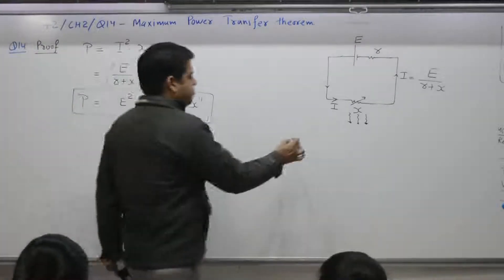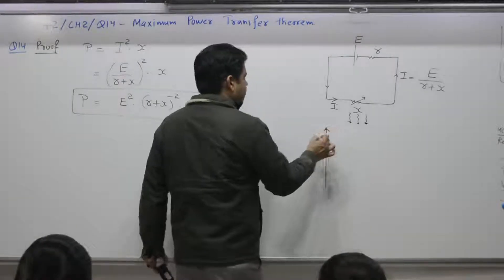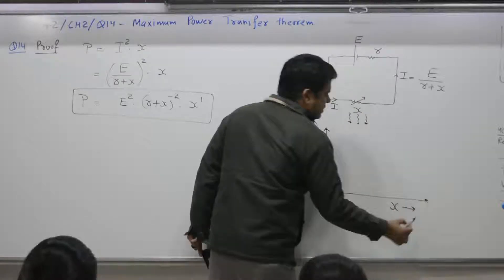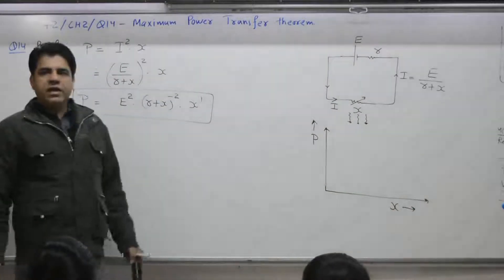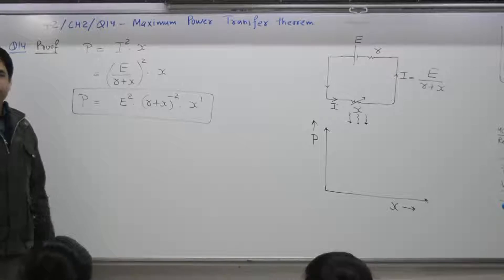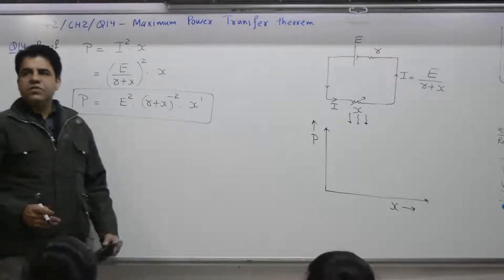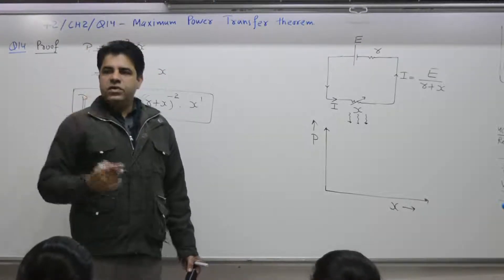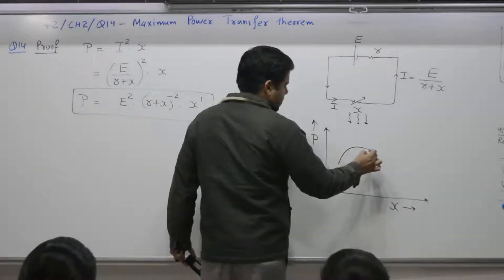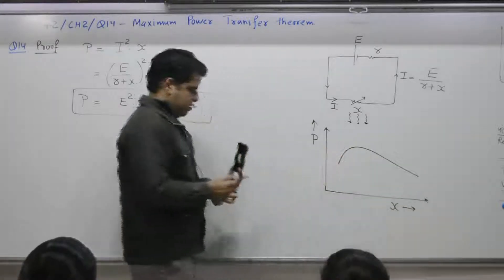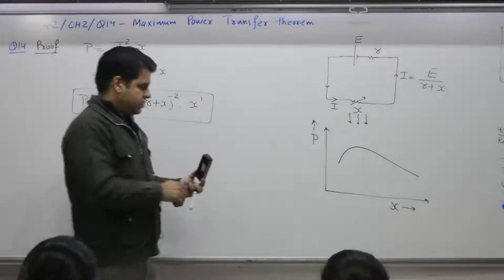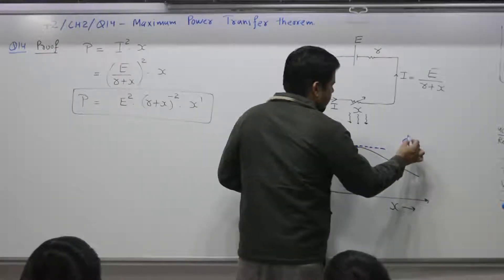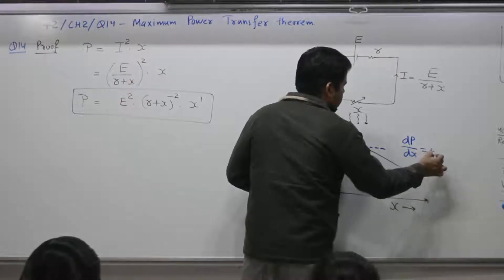So P varies as a function of X. To find the maximum value, we use the condition for maxima. Think of when you reach the top of a flyover — at the highest point, the slope is zero. Slope at that point means dP/dX is equal to 0.